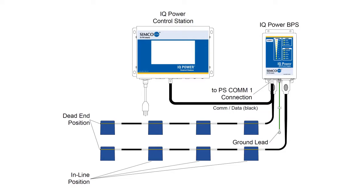The IQ Power Nozzle can be user-installed in two different positions on the high voltage wiring. When installing a single nozzle, it should be located at the end of the high voltage wiring in the dead-end position. Additional nozzles can be installed upstream from the dead-end nozzle in the in-line configuration.